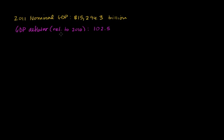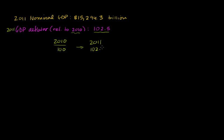The GDP deflator relative to 2010 — and you always have to know what you're taking your deflator relative to — is 102.5. This is the 2011 GDP deflator. One way to interpret this is if the base year is 2010, prices in 2010 can be viewed as being at 100, and now in 2011 we are at 102.5. In other words, the general level of prices has gone up by 2.5% — it went from 100 to 102.5.